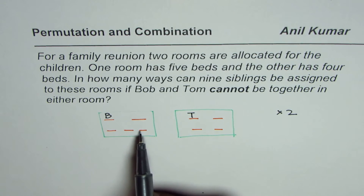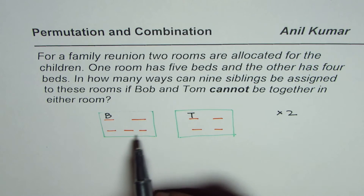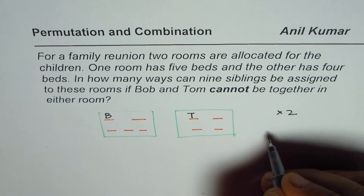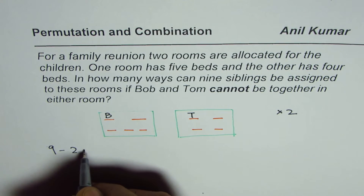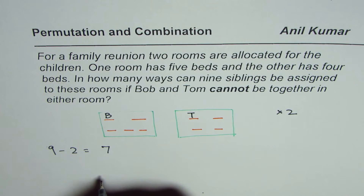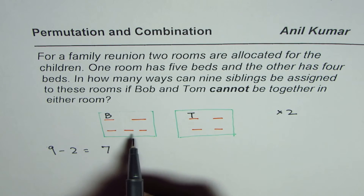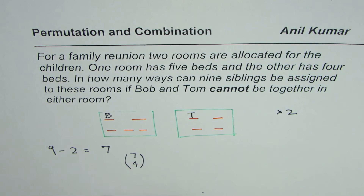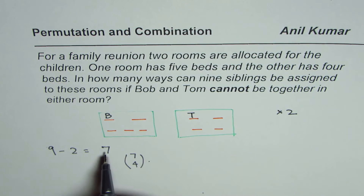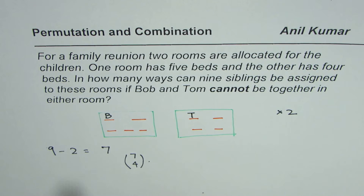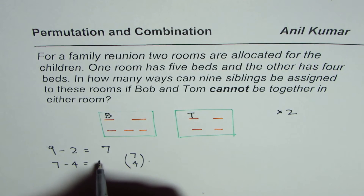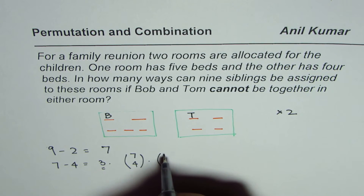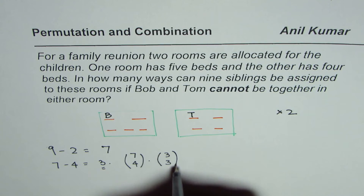Now we have to select the others. From the nine, we have already taken away two, so we are left with seven children to select from. In the first room, we have to select four more, so it is 7C4. Once you select four from seven, you are left with three. So the choice is 3C3 — we select all three remaining children for the other room.